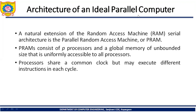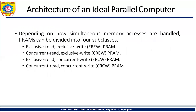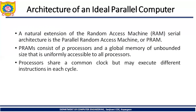The architecture of an ideal parallel computer: a natural extension of a Random Access Machine (RAM) serial architecture is the Parallel Random Access Machine or PRAM. PRAM consists of P processors and a global memory of unbounded size that is uniformly accessible to all processors. Processors share a common clock but may execute different instructions in each cycle. The time to access the memory is uniform and identical for every processor — that is why it is a uniform memory access architecture.